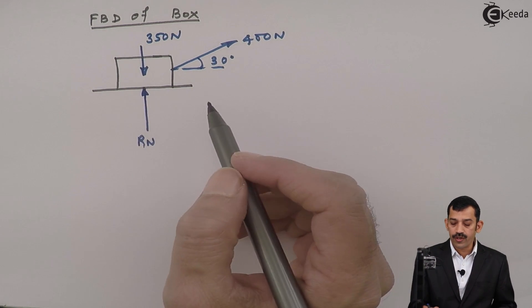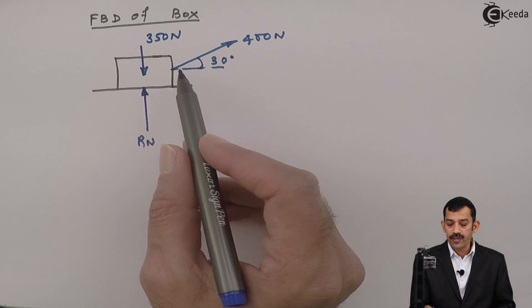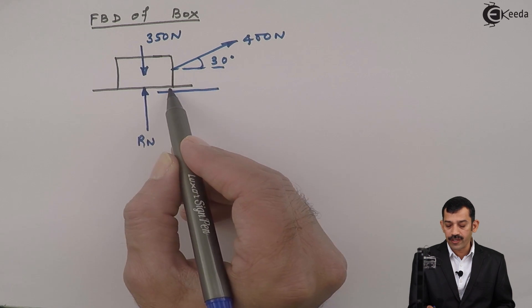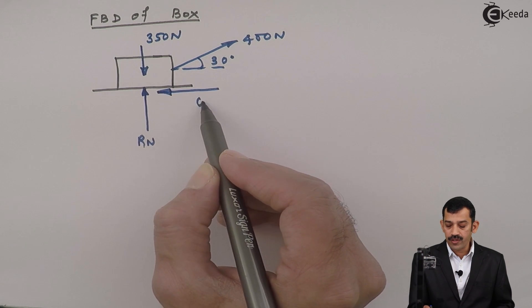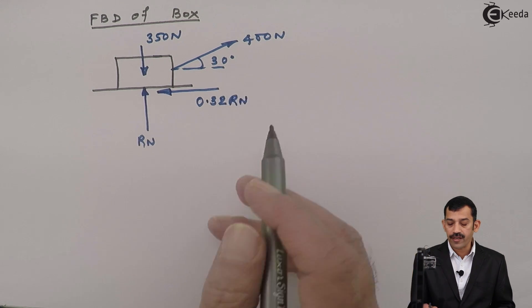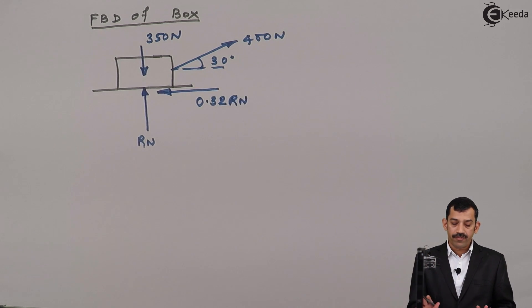Now due to this 400 Newton, definitely the body or box will accelerate in rightward direction. Frictional force will get in leftward direction. Mu is given as 0.32. So this is 0.32 Rn. This is nothing but the free body diagram.